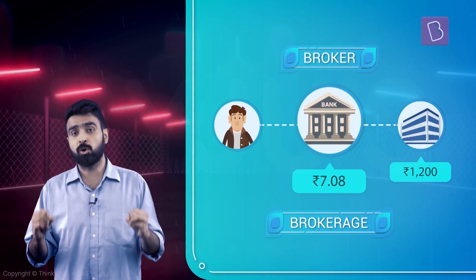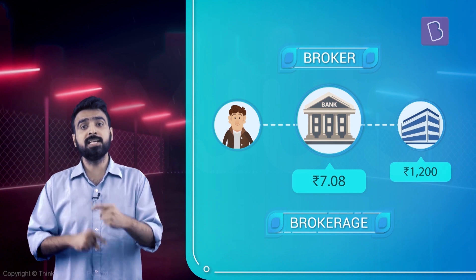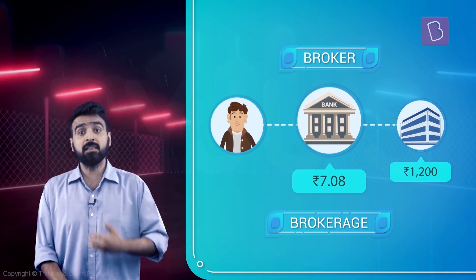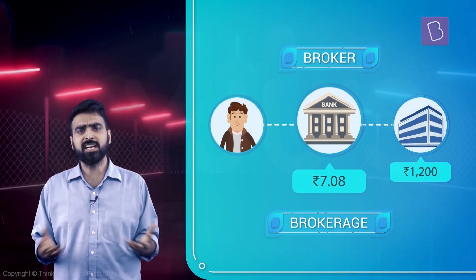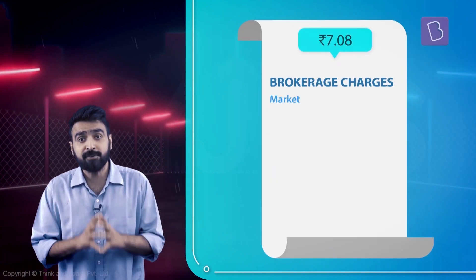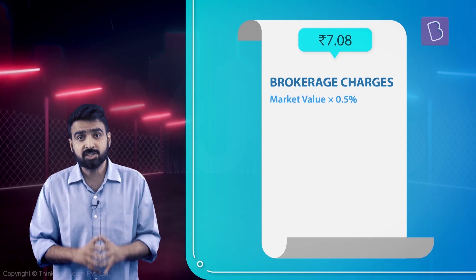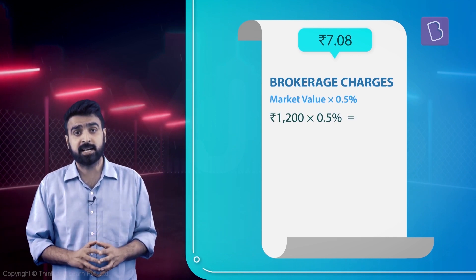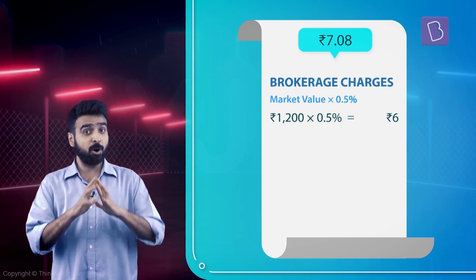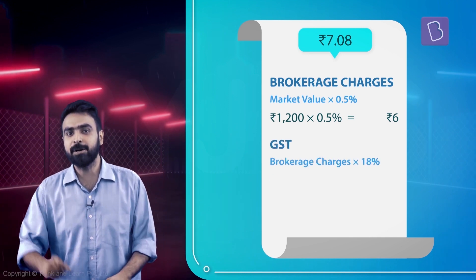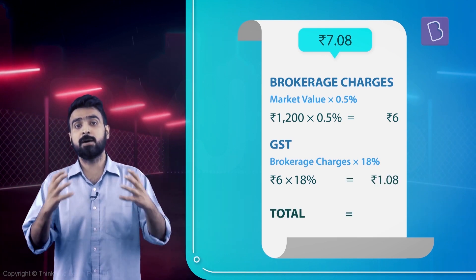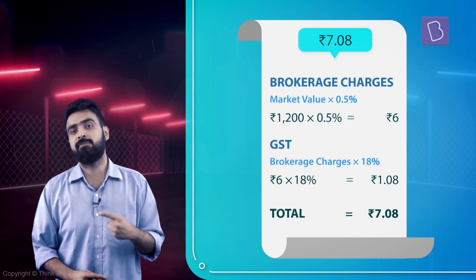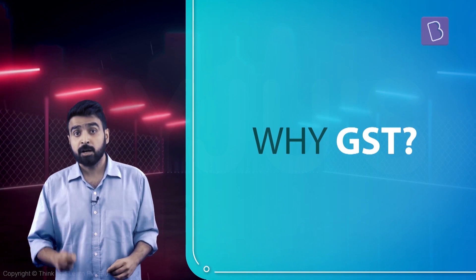The bank is called a broker — a middleman who facilitates trades. He connected us and the stock exchange and charged this money. This includes 0.5% of the market value as brokerage, which comes out to be 1200 × 0.5% = 6 rupees. Plus, there is a GST element of 18%, which comes out to 1 rupee and 8 paisa. Brokerage is a service, and all services have an element of GST.